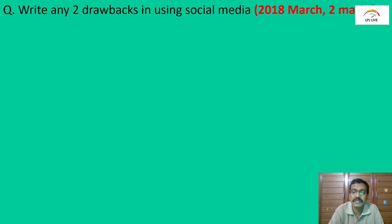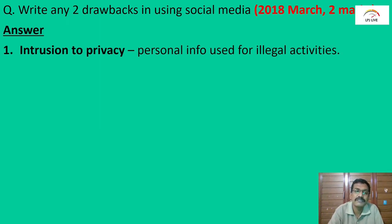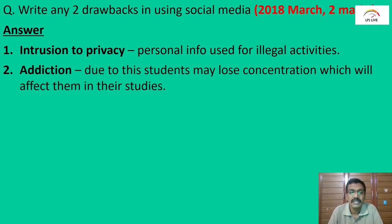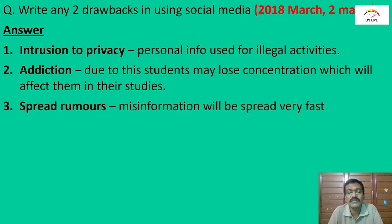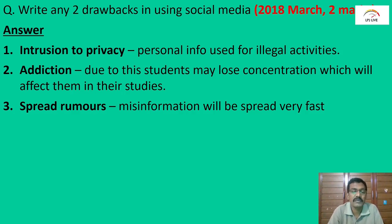Write any two drawbacks of using social media — platforms like Facebook, Twitter, and Instagram. The first drawback is intrusion to privacy: personal information shared on social media can be misused for illegal activities. The second drawback is addiction: adults and students can get addicted to social media services. A third drawback is the spread of misinformation and fake news through social media platforms.